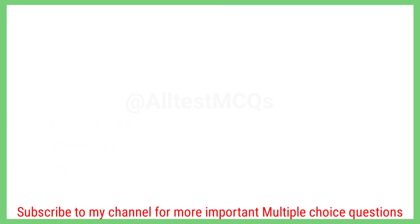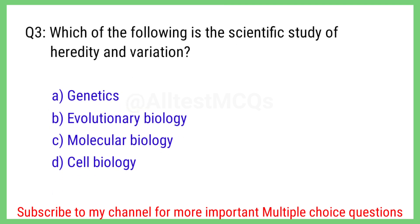Question number 3. Which of the following is the scientific study of heredity and variation? The right answer is option A. Genetics.